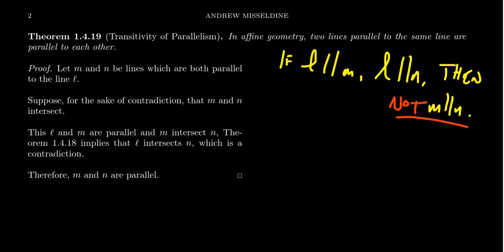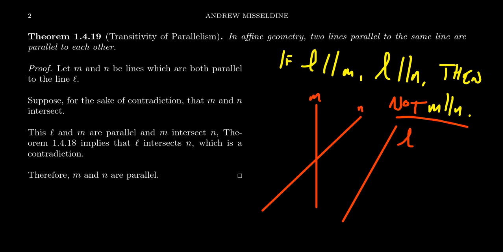Our picture looks exactly like what we saw a moment ago. Since M and N intersect each other, they cross, and L is parallel to both of them. We have our M, our N, our L. Because L and M are parallel and because M and N intersect each other, Proclus Lemma applies.